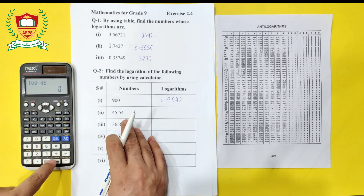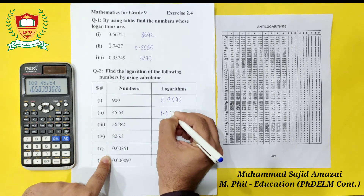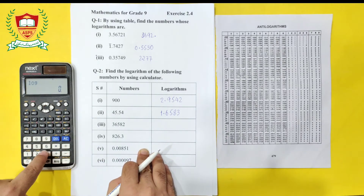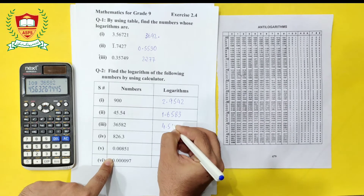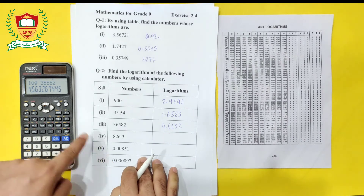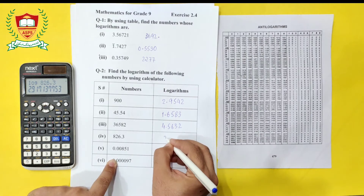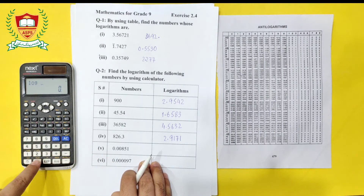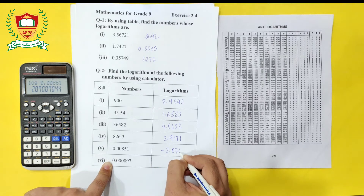Next, log of 45.54 gives 1.6583. Then, log of 365.582 gives 4.5632. Log of 826.3 gives 2.9171. Log of 0.00851 gives minus 2.0700 (approximately). We note these values as shown.